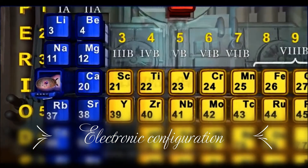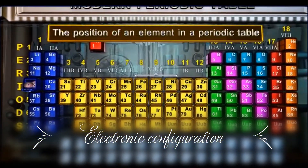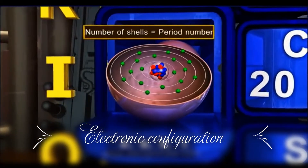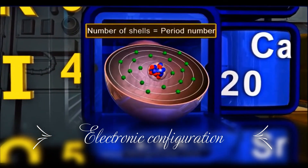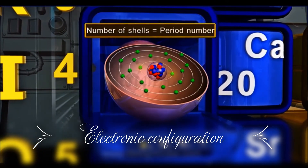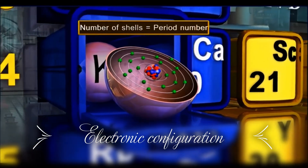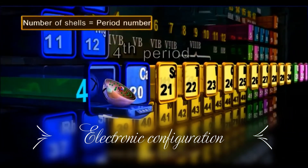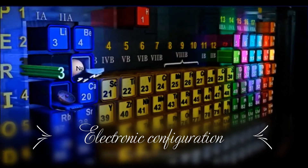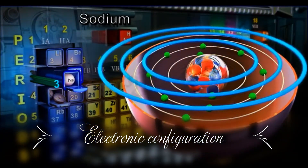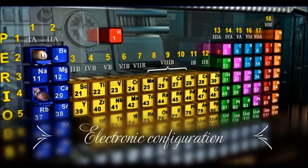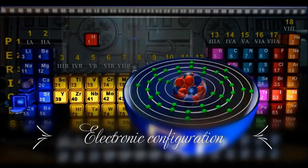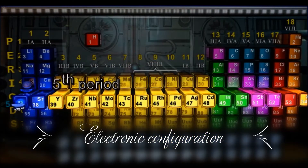The electronic configuration of an element also helps us decide the position of an element in the periodic table. The number of orbits or shells denotes the period to which that element belongs. For potassium, with electronic configuration 2, 8, 8, 1, there are four shells, and therefore it belongs to the fourth period of the modern periodic table. Similarly, sodium with three shells belongs to the third period, lithium with two shells belongs to the second period, and rubidium with five shells is placed in the fifth period, and so on.